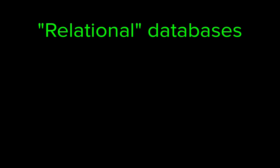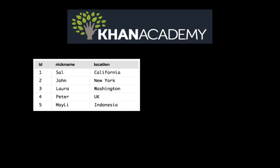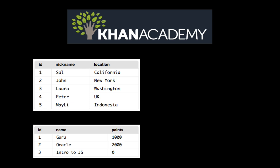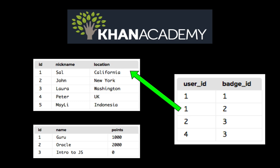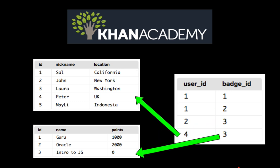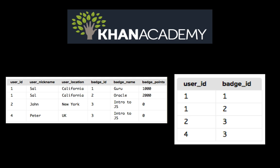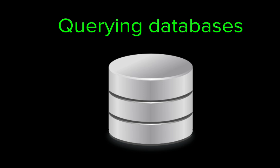Relational databases make it particularly easy to form relationships between tables. For example, in order to store Khan Academy users and their badges, we might have a users table and a badges table, and then a user badges table to remember which users earned which badges, just by mapping user IDs to badge IDs. That's a more efficient form of storage than having to repeat everything about the user and everything about the badge in the user badges table.